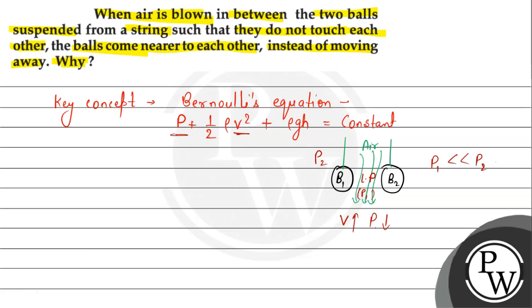So, the ball will move from high pressure to low pressure. Because P2 is our high pressure. And this direction, B2 is also high pressure. So, these two balls move from the other side to low pressure.